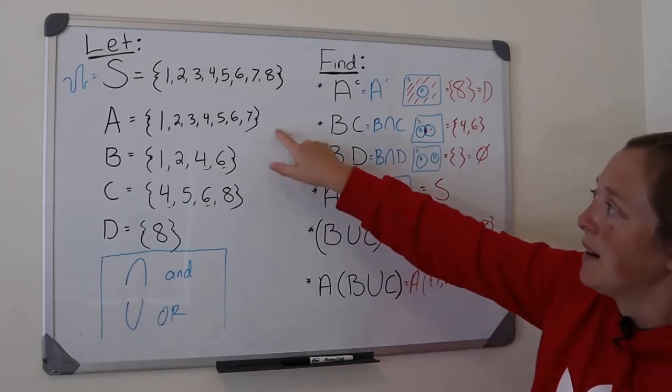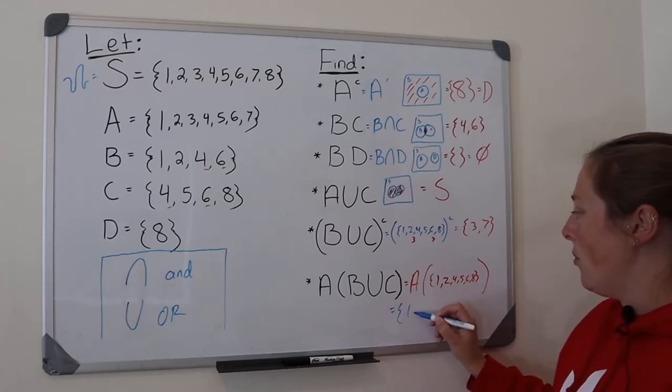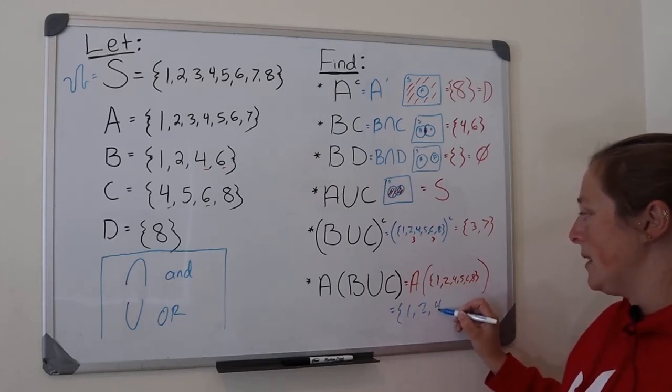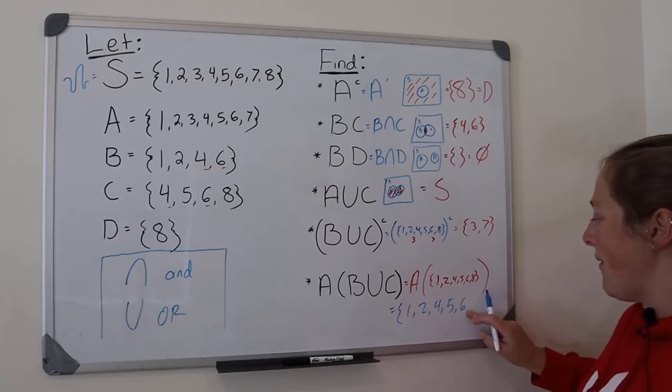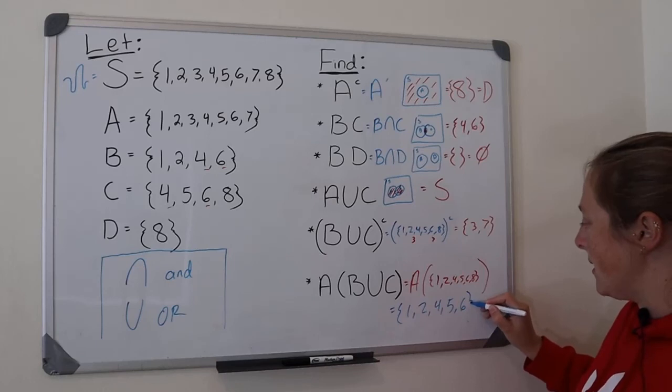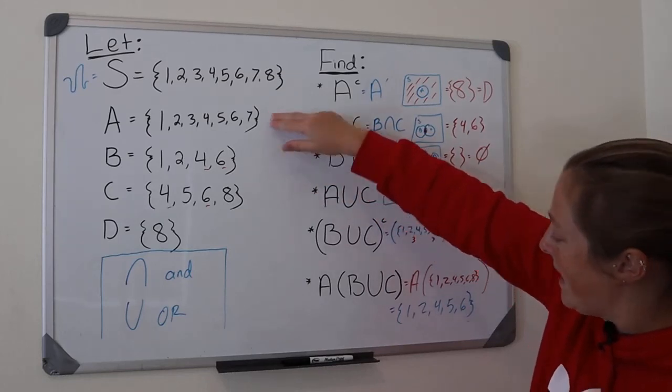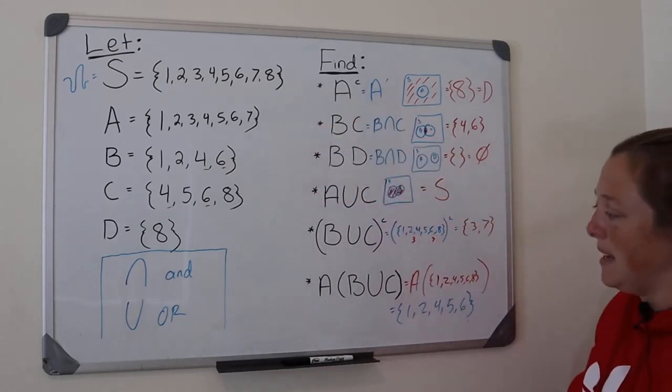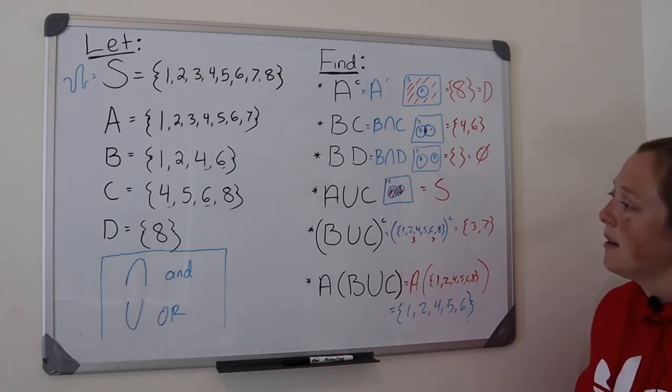Everything except eight. Because A has one, it has two, it has four, it has five, it has six, but it doesn't have eight. So it would just be these numbers here. One, two, four, five, and six would be both in A and in B union C.